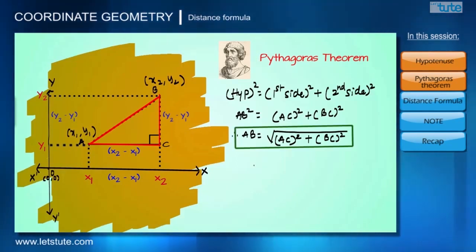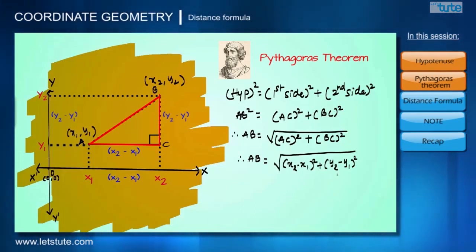So by putting the values of AC and BC in Pythagoras theorem, we get AB equals square root of (x₂ minus x₁) the whole squared plus (y₂ minus y₁) the whole squared. Now this is called the distance formula and we have derived this using Pythagoras theorem.